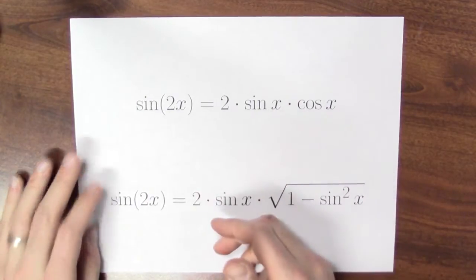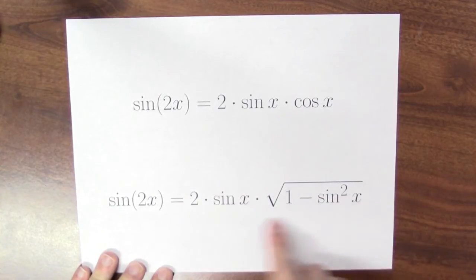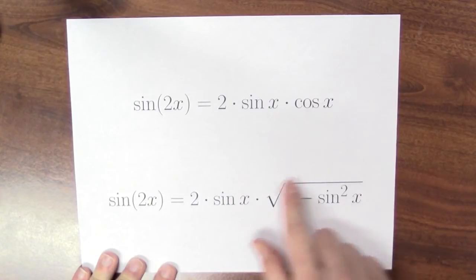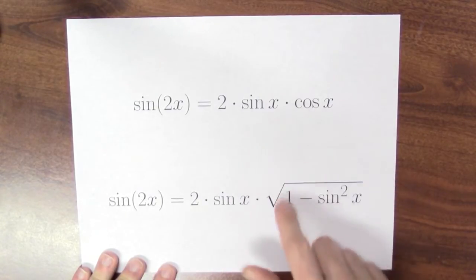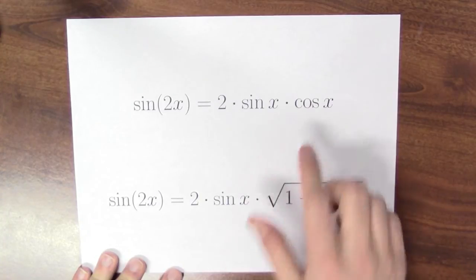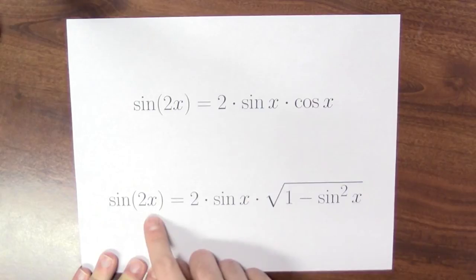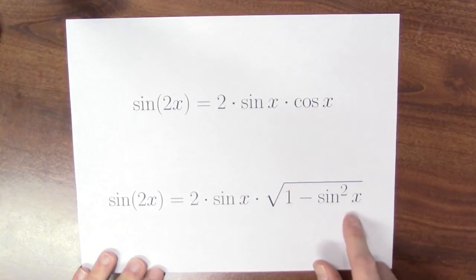Another way to rewrite that double angle formula is to write it entirely in terms of sine. Cosine is the square root of 1 minus sine squared x, as long as the cosine is positive. So if I'm working with a value of x for which cosine's positive, then sine of 2x is 2 times sine x times the square root of 1 minus sine squared x.